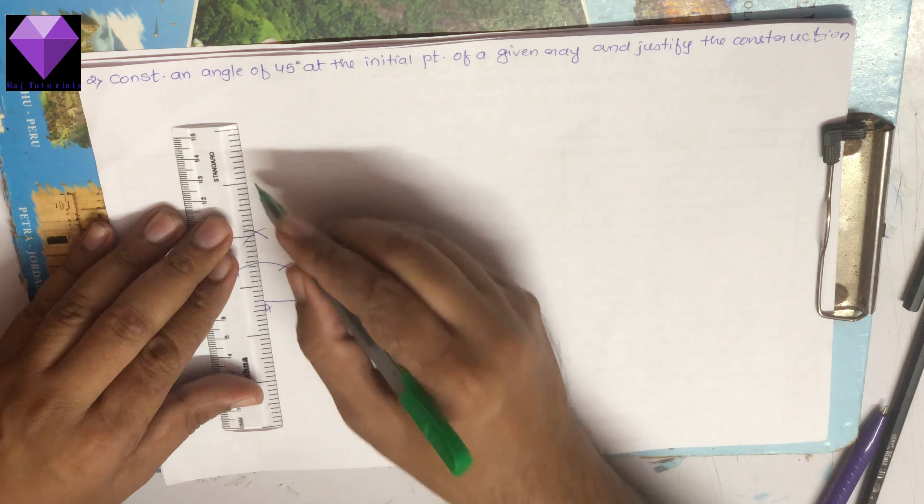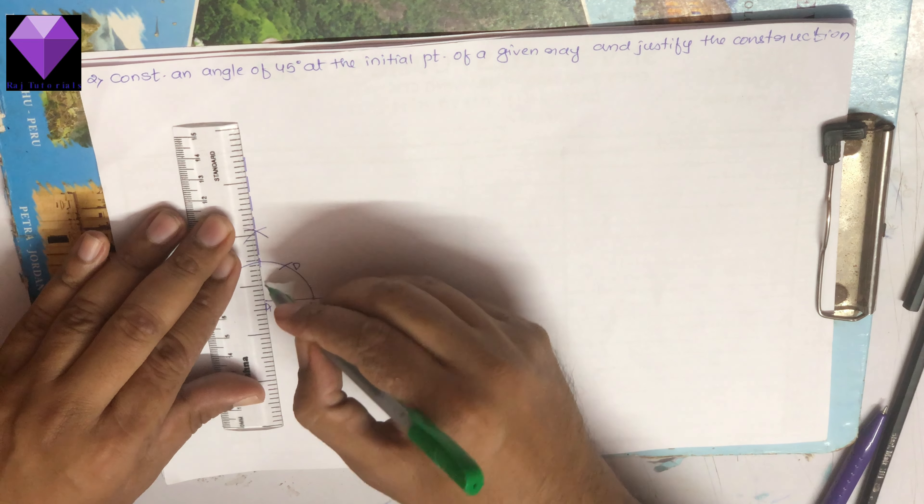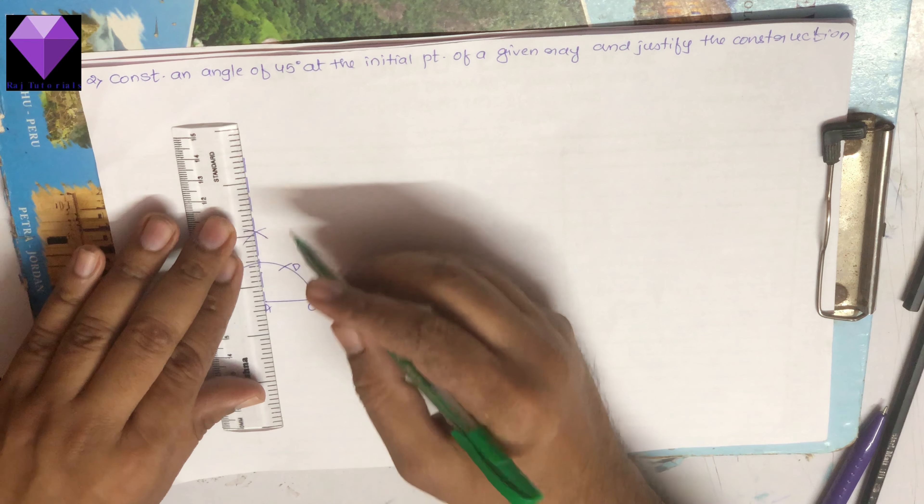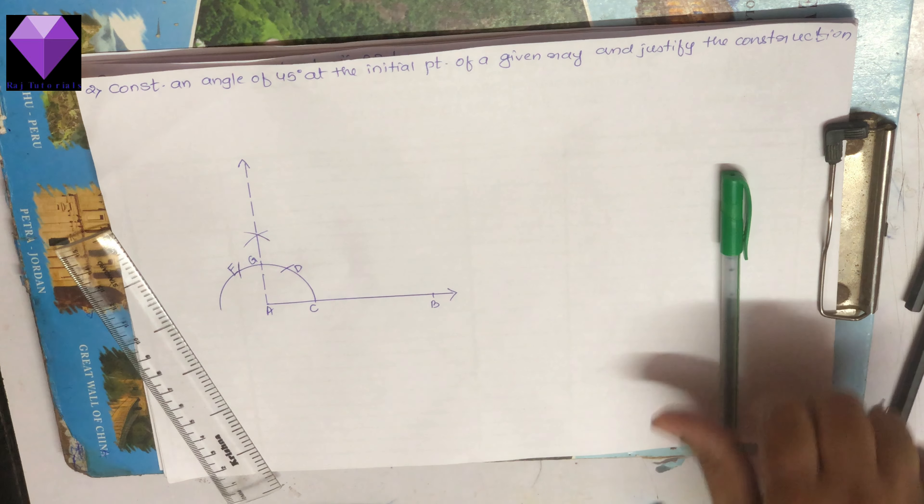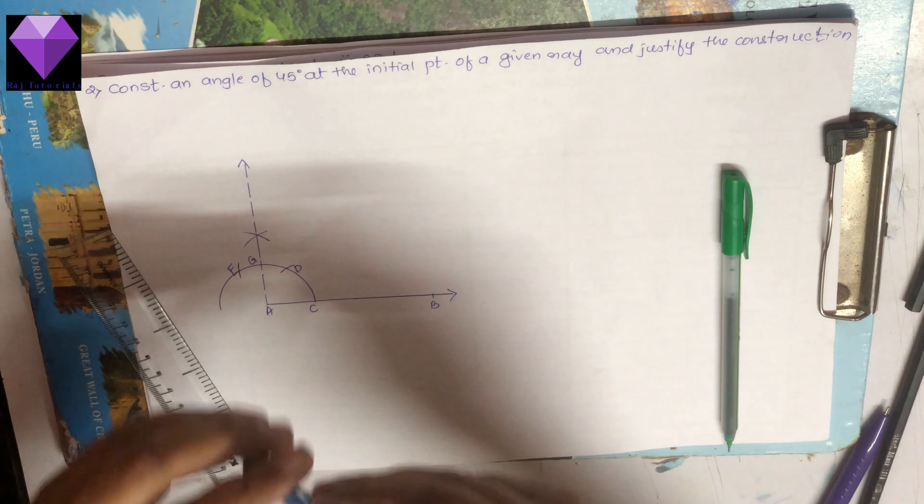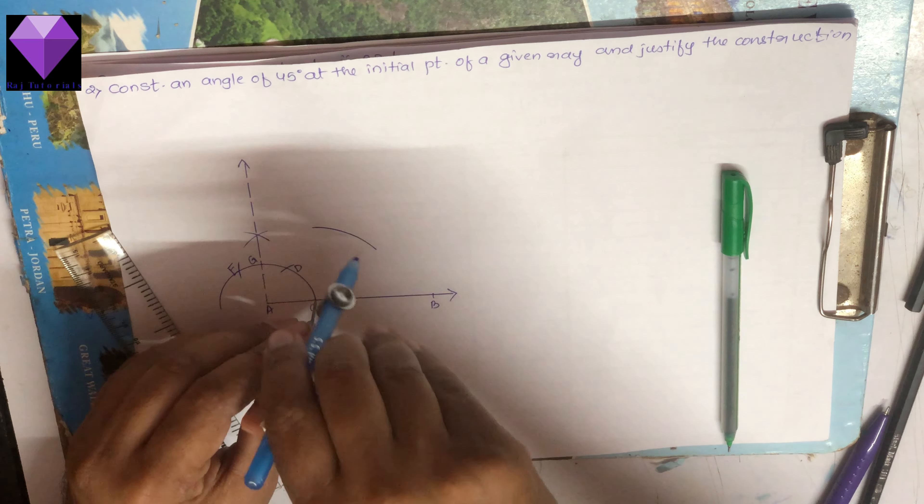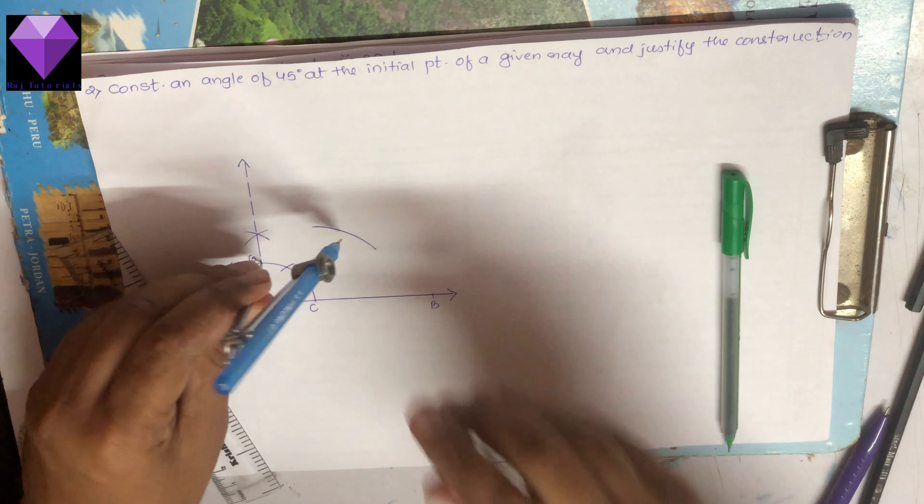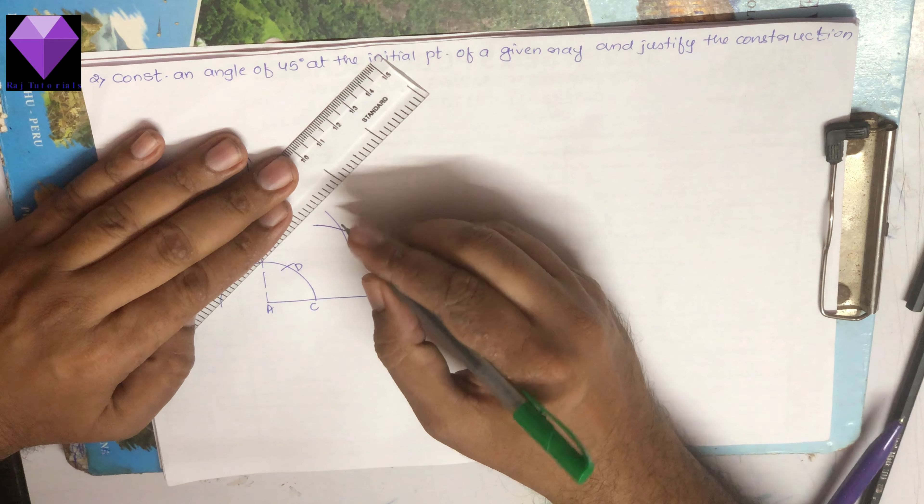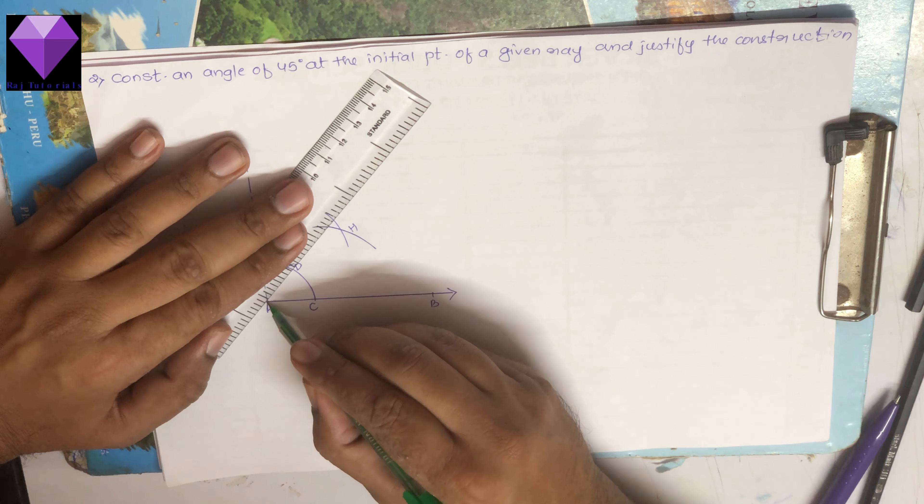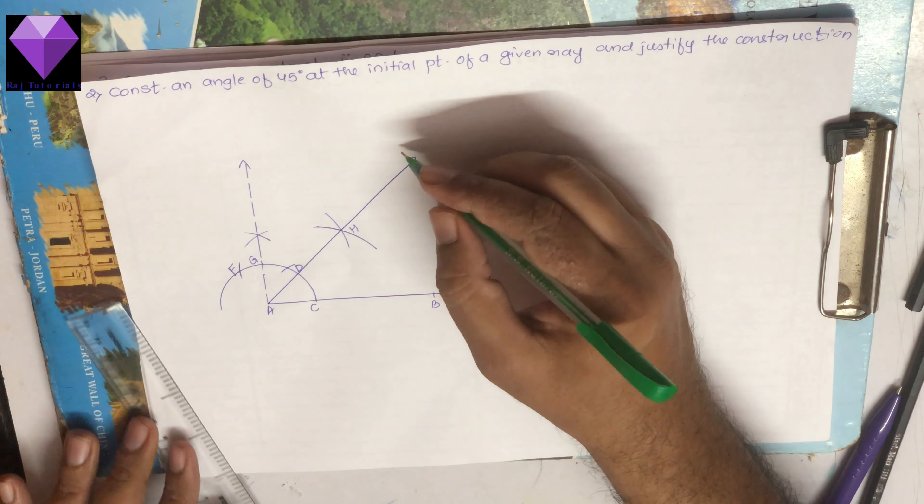Now I am drawing this with a dotted line because I want only that point. So this is my G point. Now I have to bisect CG. To bisect CG with any radius, I am making one arc with C as center, one arc with G as center, and now I am joining A with the intersection point H. Thus my 45 degree construction is ready.